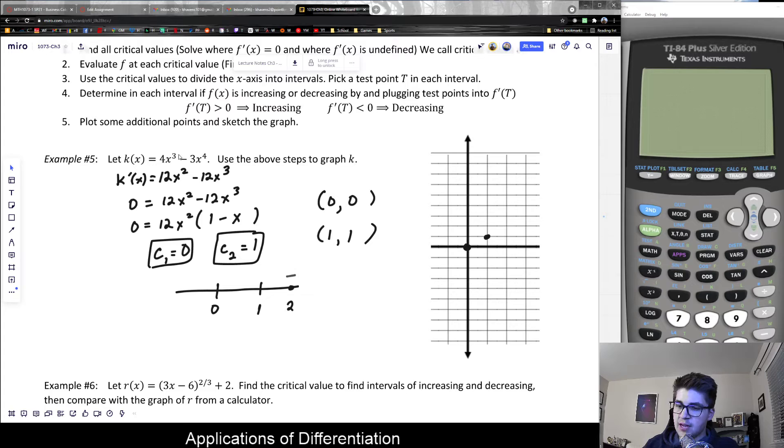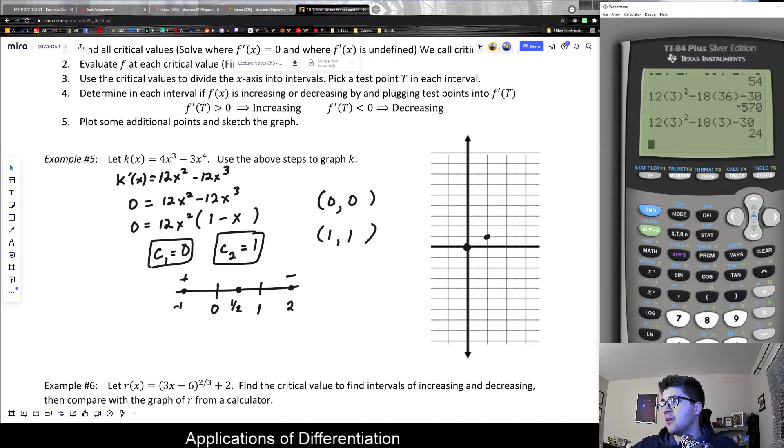The derivative at 2 would be 12(4) - 12(8), which would be negative because we're subtracting more than we have. I could also check at -1 to see: this would be positive minus a triple negative, which would be positive. All you care about is the sign; it doesn't matter what the actual value is. Then in between 0 and 1, I'll just pick 1/2 as a random intermediate point.